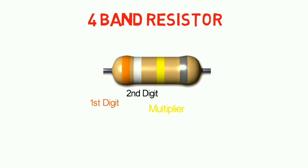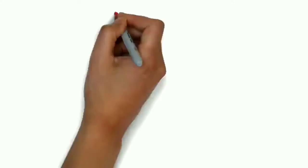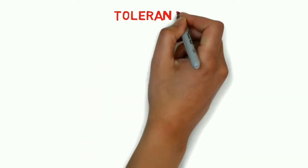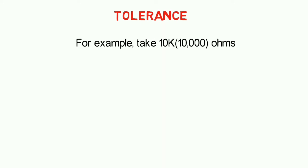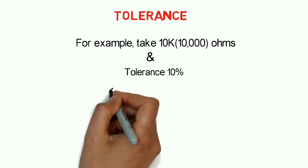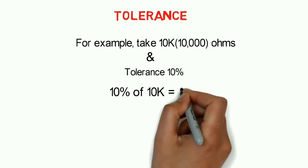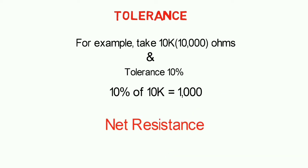Now, when you decode this color coding, it gives a value of 10k ohm. If you use the same tolerance for the same color, you get 10k with 10% tolerance. The correct resistance value is therefore 10k minus 1000 and 10k plus 1000 ohms.